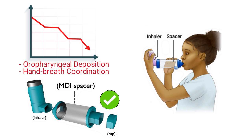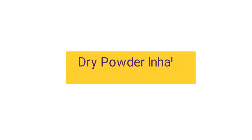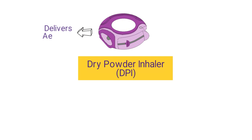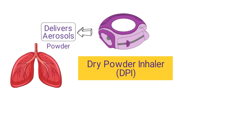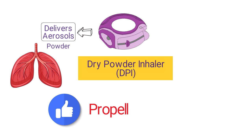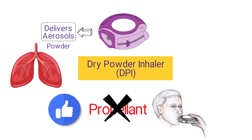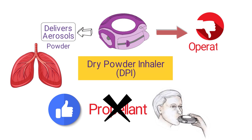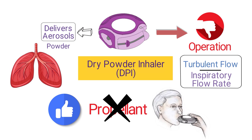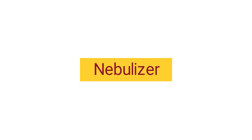Next we have the dry powder inhaler, or DPI. It is a breath-actuated device that delivers aerosols in the form of fine powder particles that can reach the lungs by inhalation. Dry powder inhalers are advantageous because they do not require a propellant, and the patient does not need hand-breath coordination to receive a drug dose. However, one primary disadvantage is that their operation depends on turbulent flow and the patient's inspiratory flow rate — the patient must be able to perform a deep and fast inhalation to receive a drug dose.